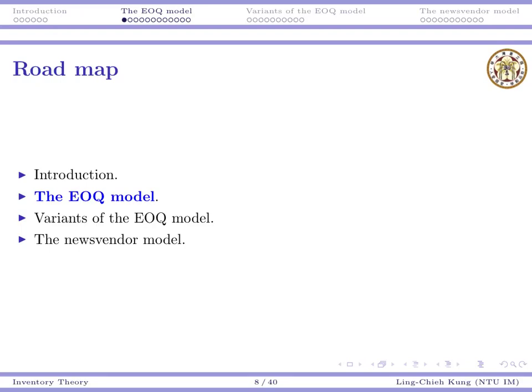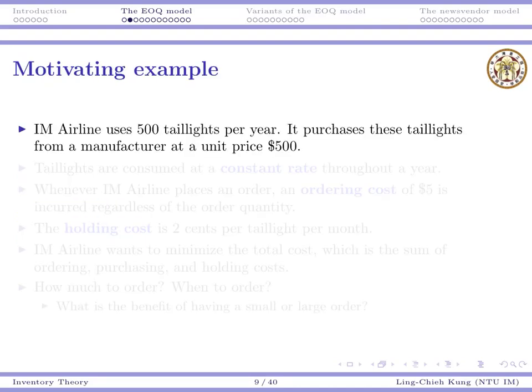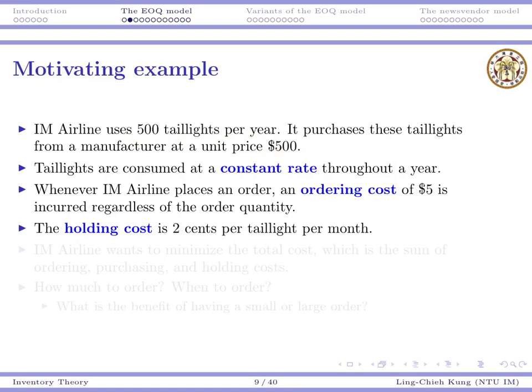Let's introduce the first model: the EOQ model. Suppose an airline company uses 500 taillights per year and purchases these taillights from a manufacturer at a unit price of $500. So each taillight costs $500, and in total each year we need 500 taillights.